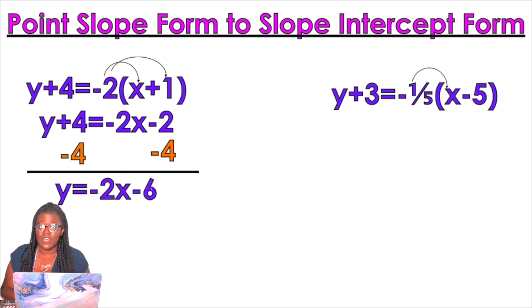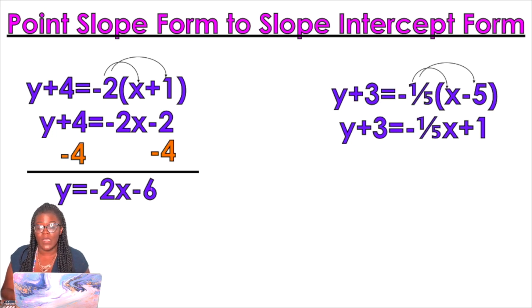So then we'll do the next example. We're gonna distribute that negative 1 fifth. I know! Not a fraction! It's totally okay. So negative 1 fifth times x is still gonna be negative 1 fifth x. And then negative 1 fifth times negative 5. You have to think about, what is a fifth of 5?